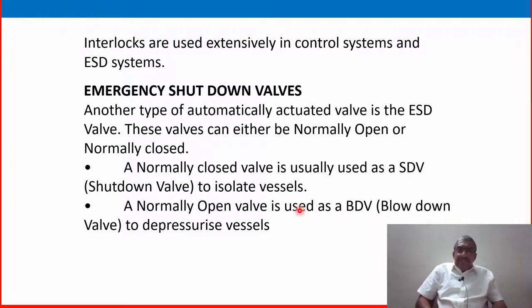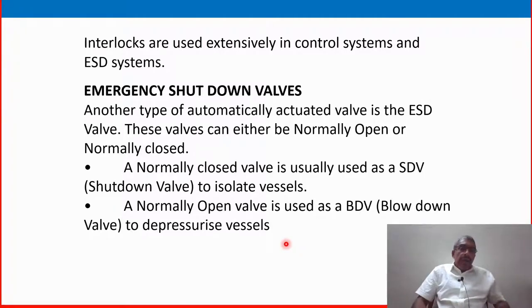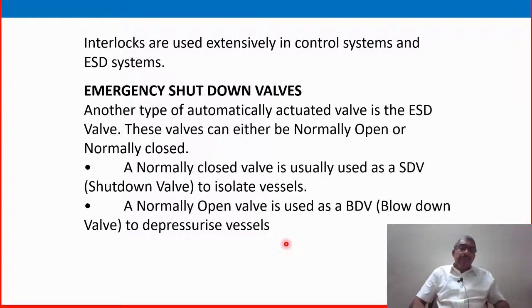Interlocks are used extensively in control systems and ESD systems. Another type of automatically actuated valve is the ESD valve. These valves can either be normally open or normally closed. A normally closed valve is used as a shutdown valve to isolate the vessel. A normally open valve is used as a BDV — blowdown valve — to depressurize the vessel. A video exclusively on emergency shutdown valves has already been released; please watch it for full detail.